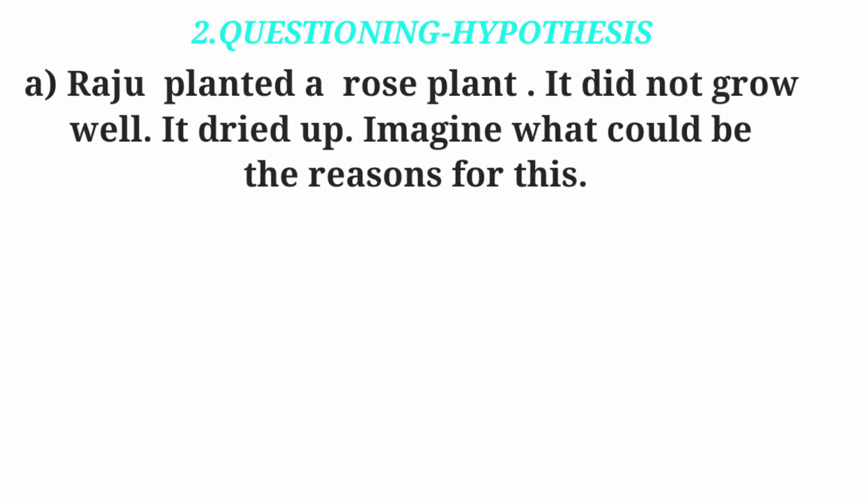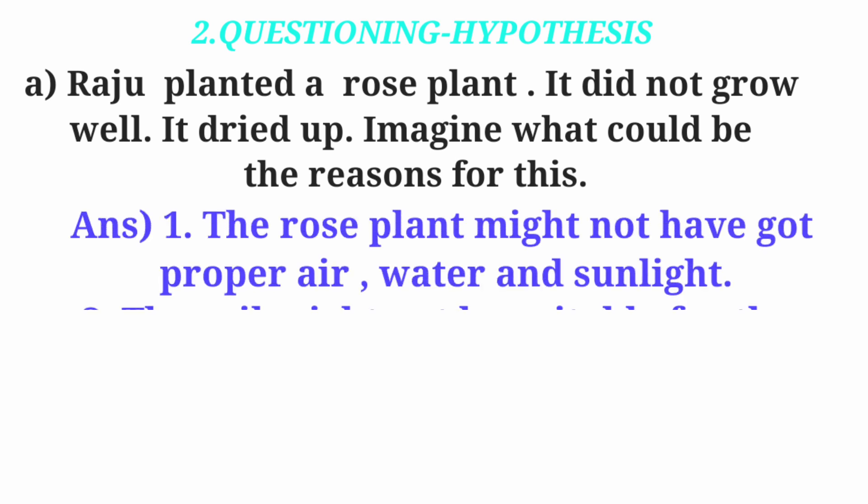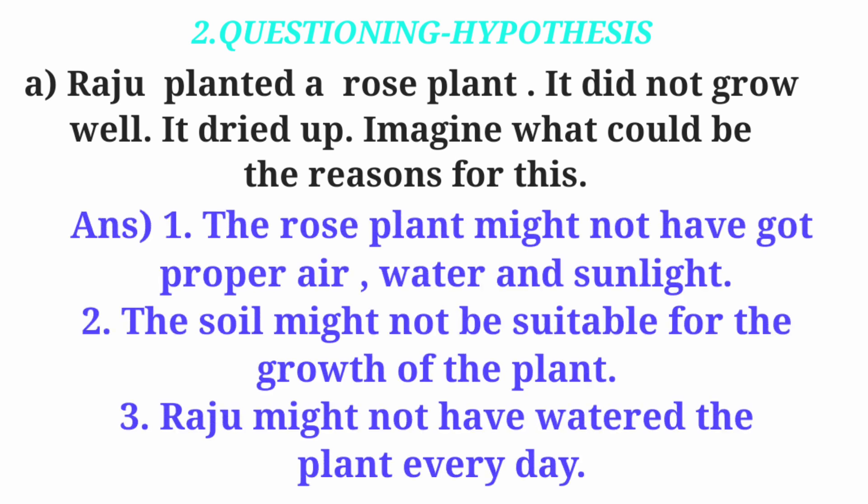Questioning Hypothesis, Question A. Raju planted a rose plant. It did not grow well and it dried up. Imagine what could be the reasons for this. Answer: The rose plant might not have got proper air, water and sunlight. The soil might not be suitable for the growth of the plant. Raju might not have watered the plant every day.